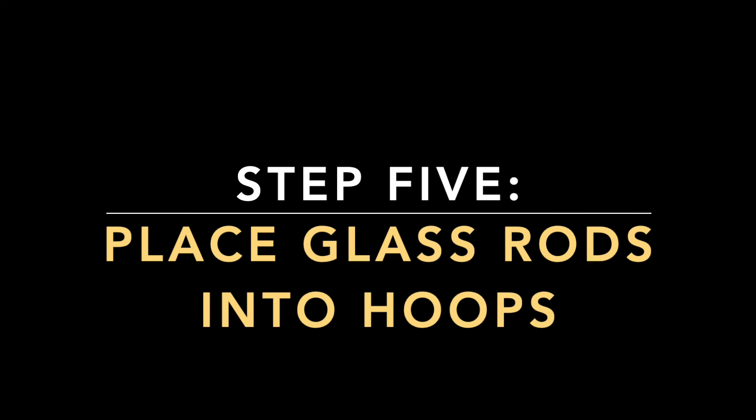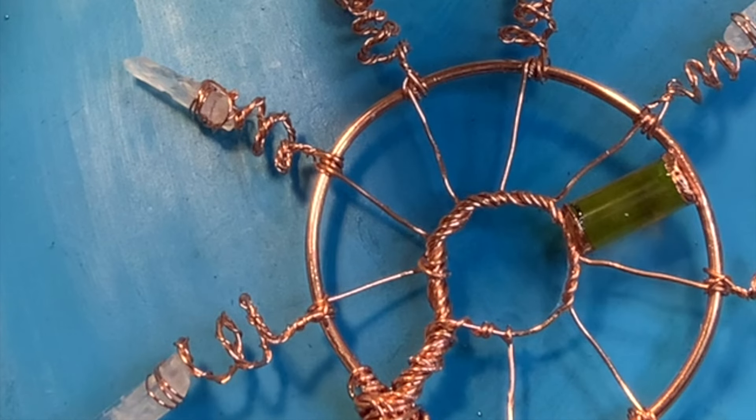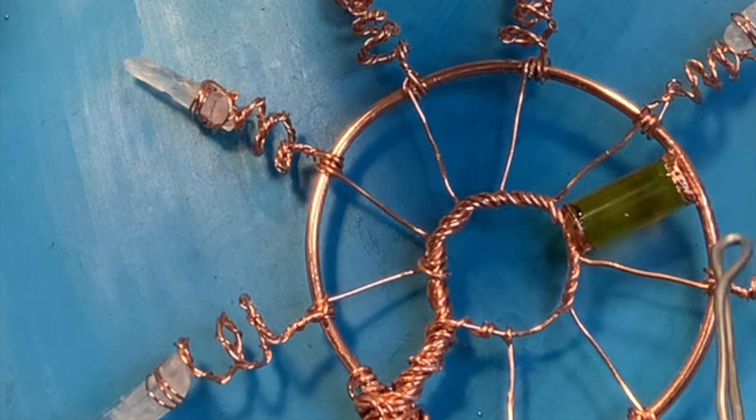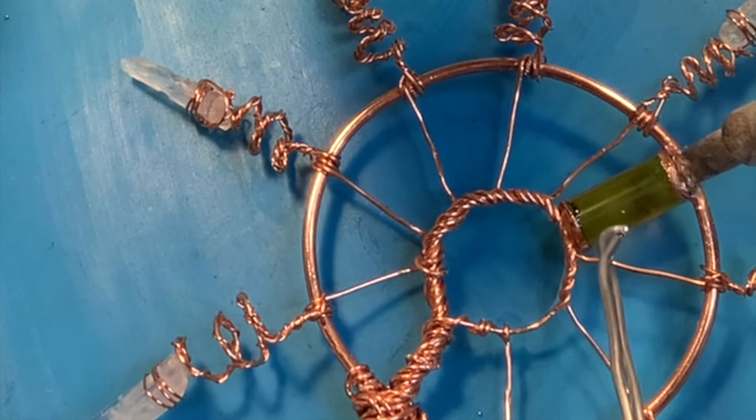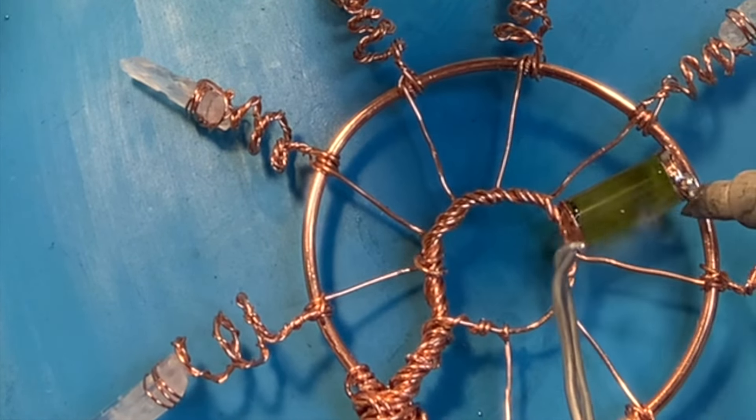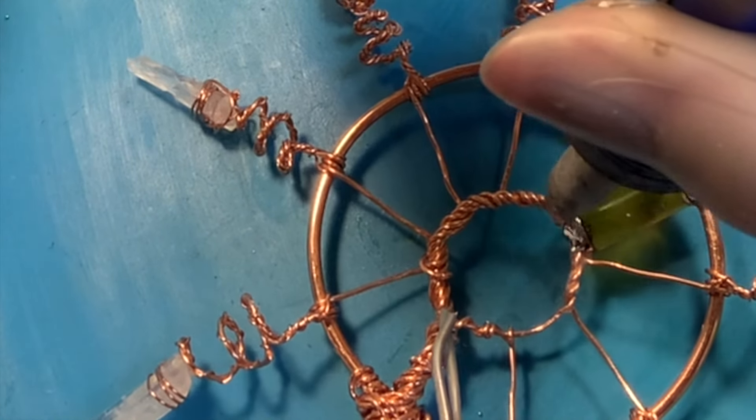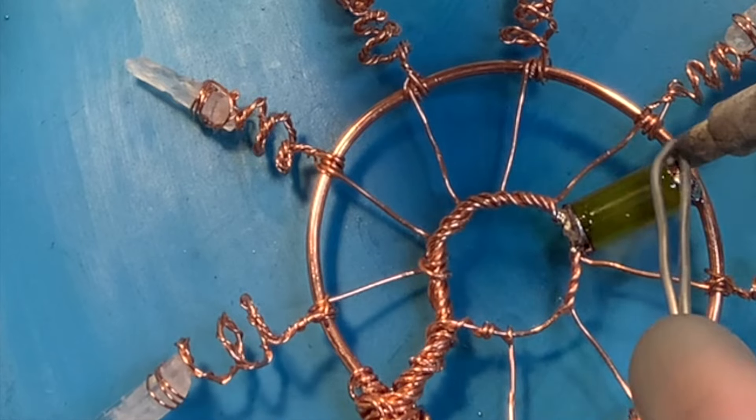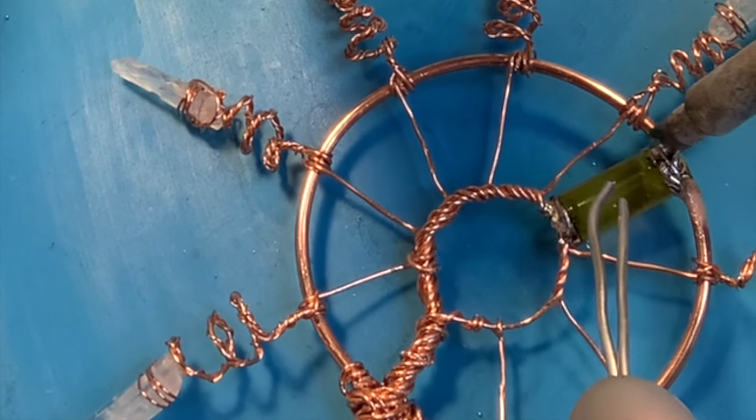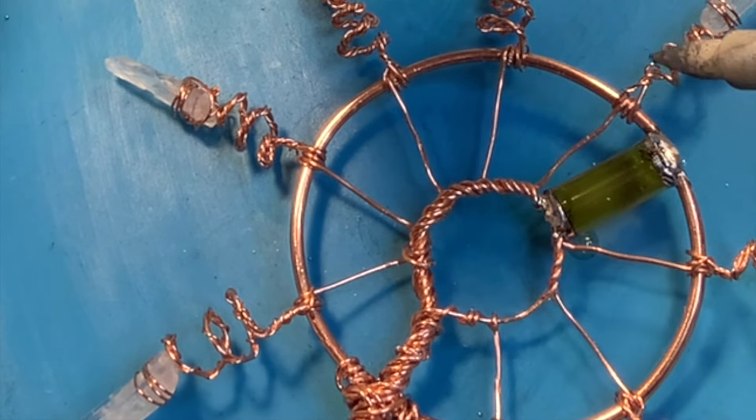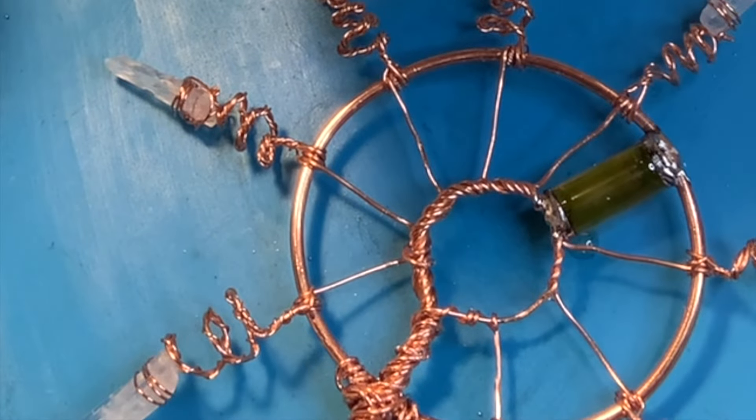Step five: place glass rods into the hoop. I have all those glass rods and I made a bunch of them and foiled them and foiled the ends. Now I am placing them inside where they belong.